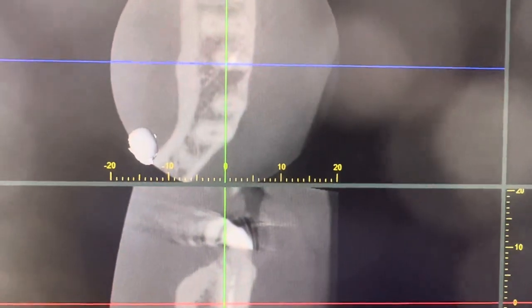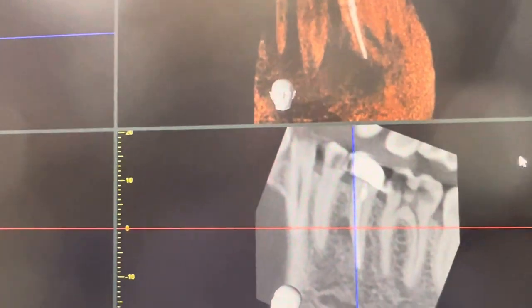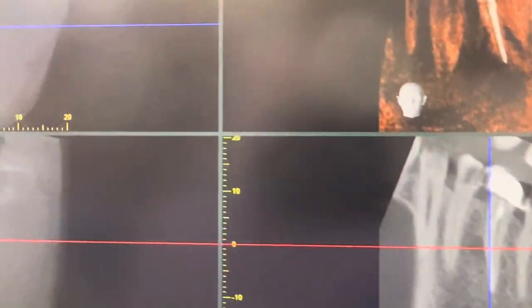So if you're going to have a root canal done, get your 3D x-ray done first so you know what you're going into. If your dentist doesn't do 3D x-rays, find somebody who does. That's it. Hope it helps you guys.